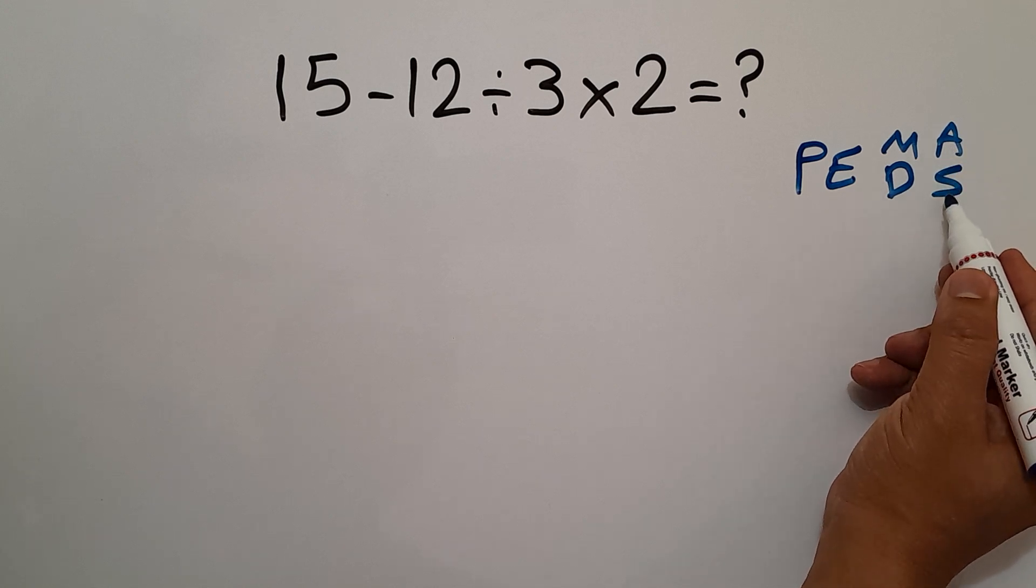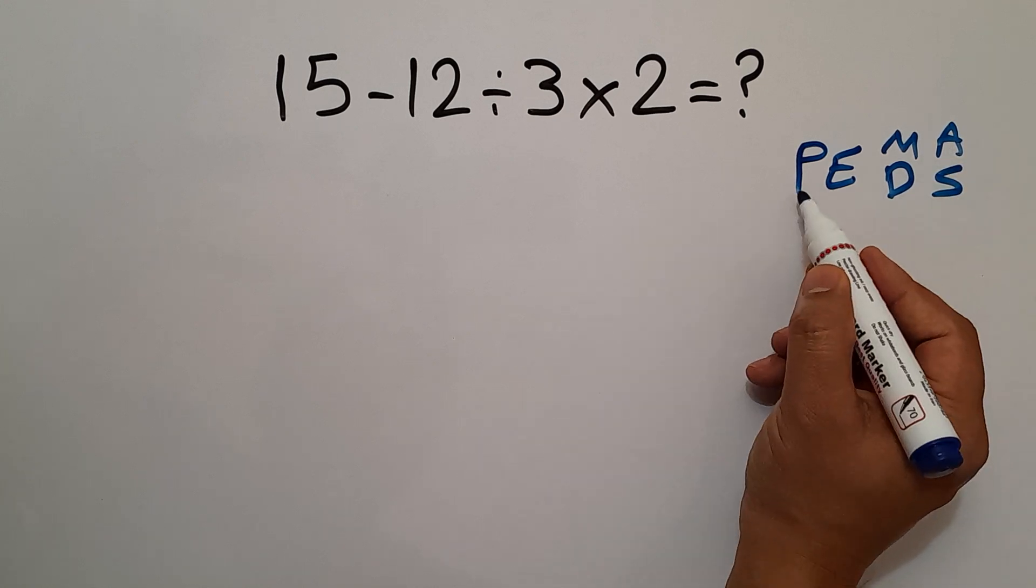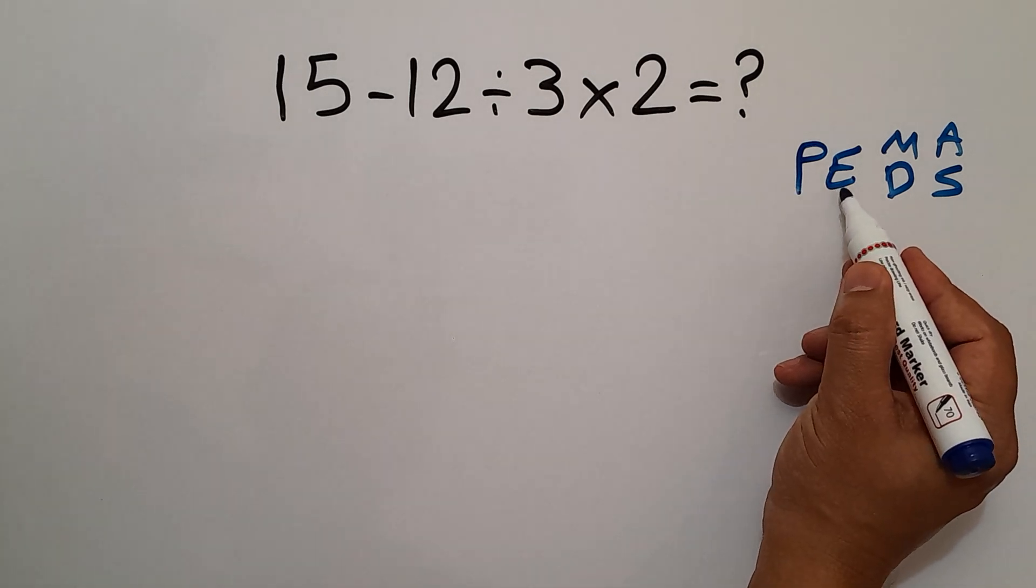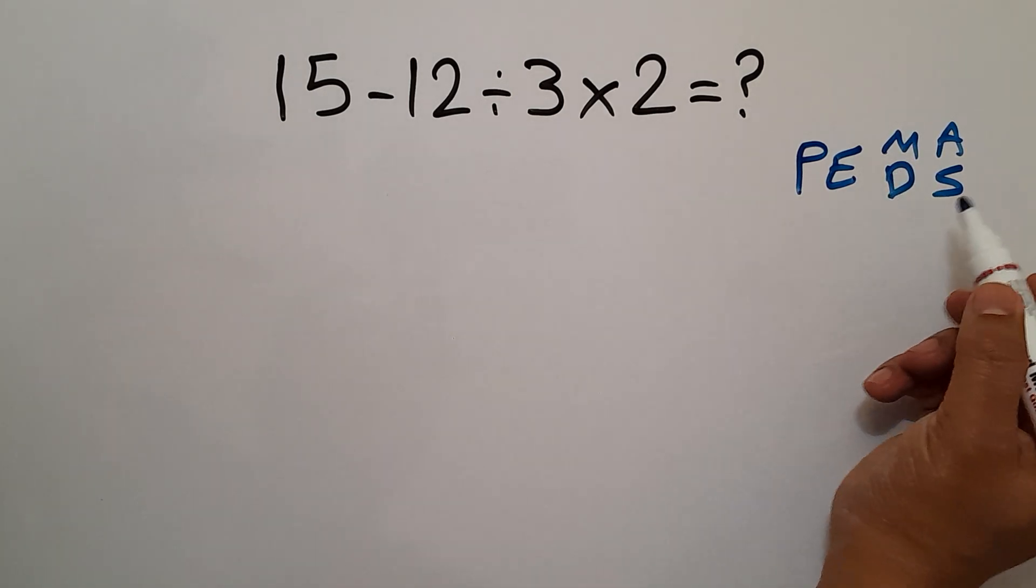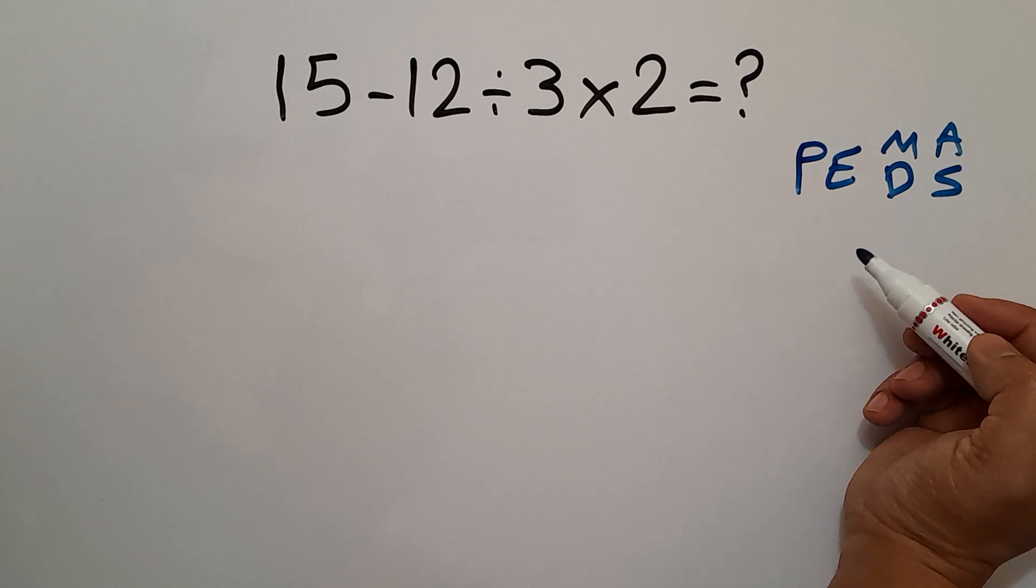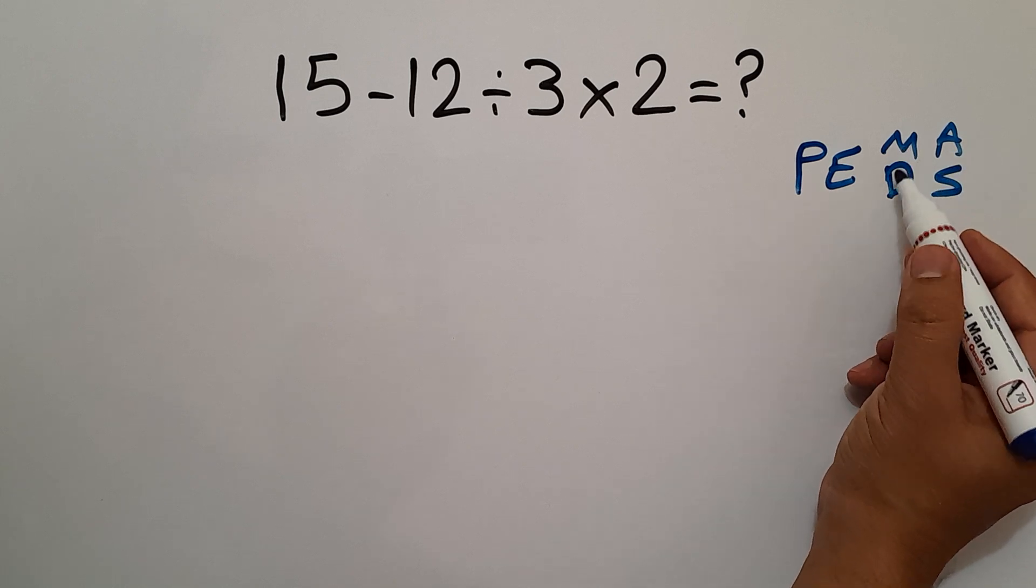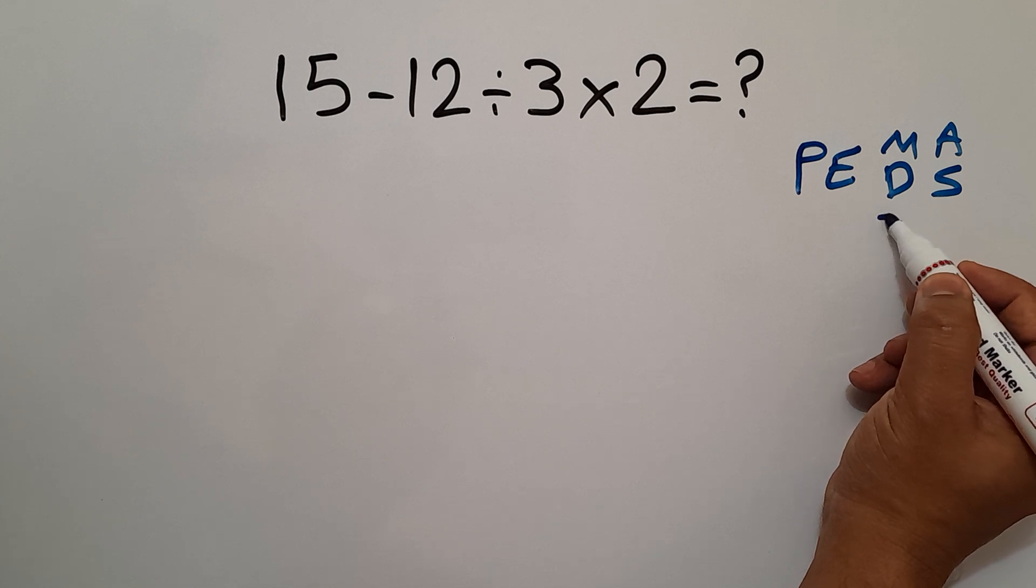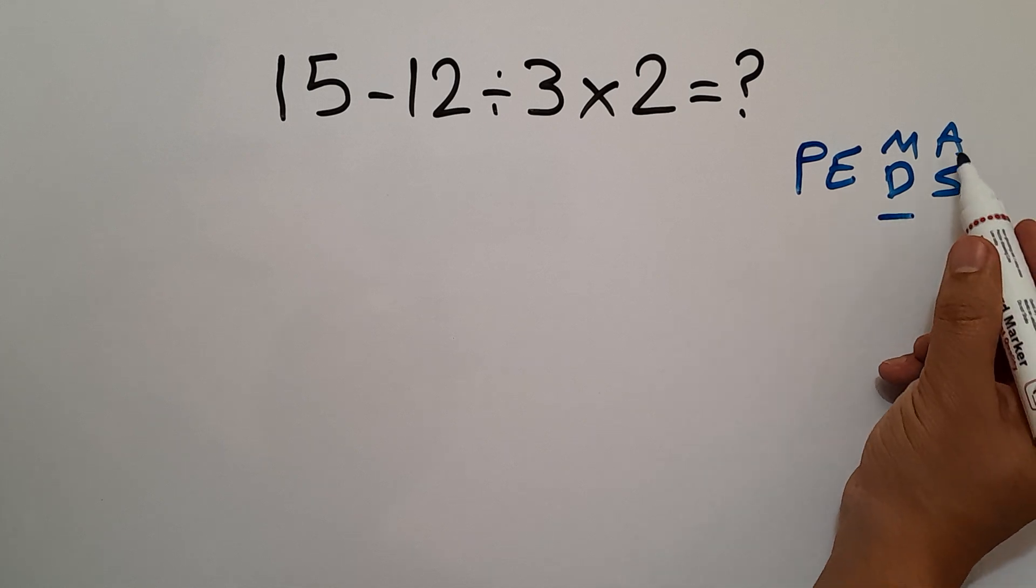We first do parentheses, then exponents, then multiplication or division, and finally addition or subtraction. Remember that multiplication and division have equal priority and we have to work from left to right.